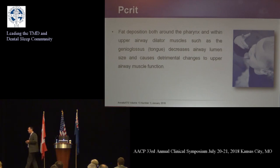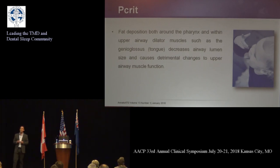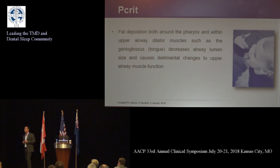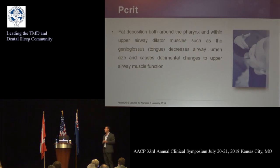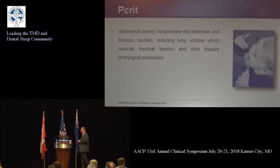A reduction of body weight by 10% reduces the AHI index by 13%. There is no question that in some people, obesity certainly plays a role, and as obesity increases, obstructed sleep apnea increases. But it's not just the anatomy of the throat we should be considering — it's the breathing muscles too. Abdominal obesity compresses the abdomen and thoracic cavities, reducing lung volume.